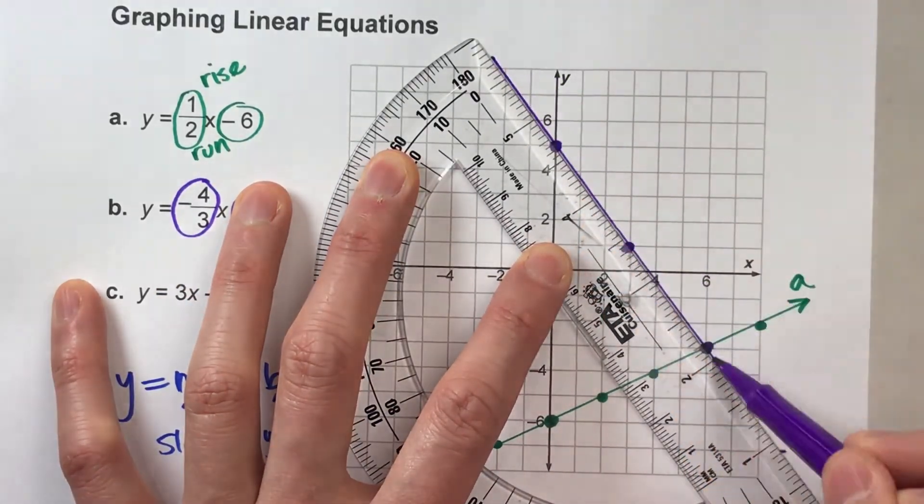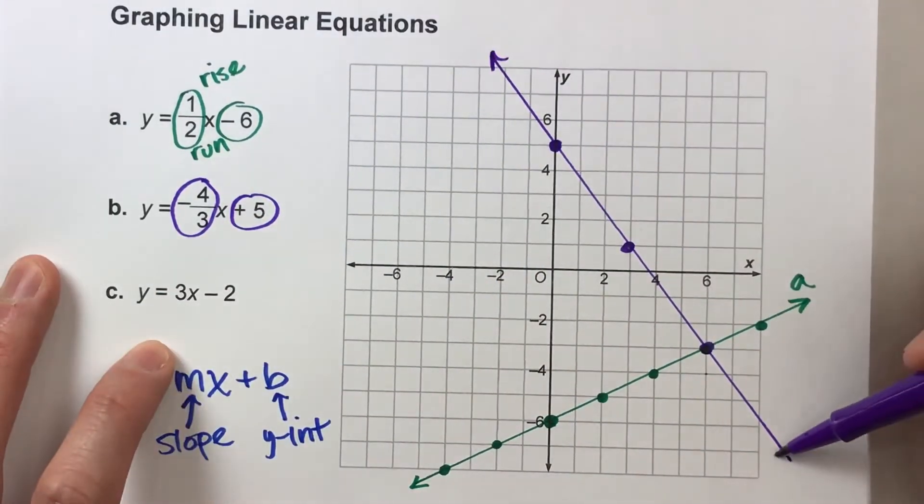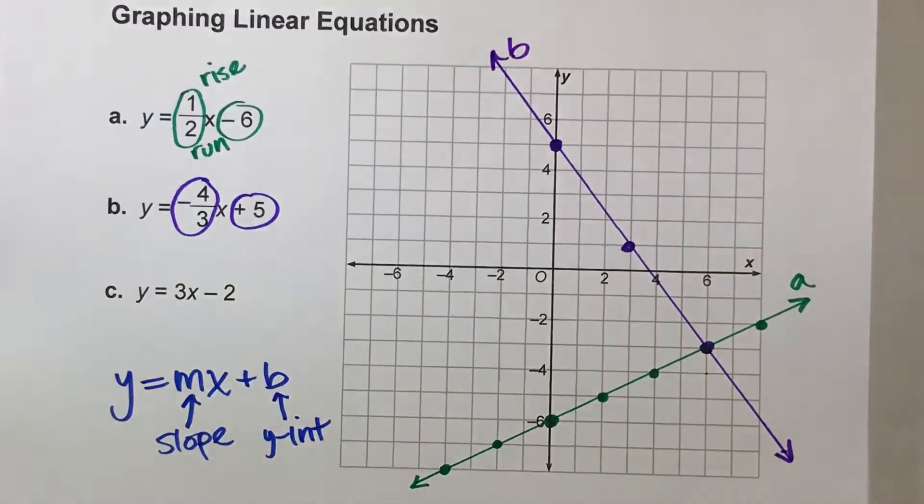And if I use my straight edge, there's my line. I'll put my arrows to show it goes on forever in both directions, and I'll label it B. So there's the second line.